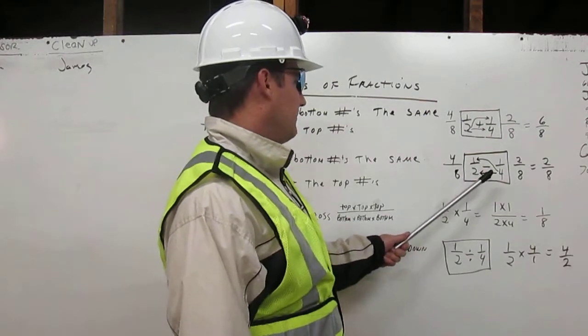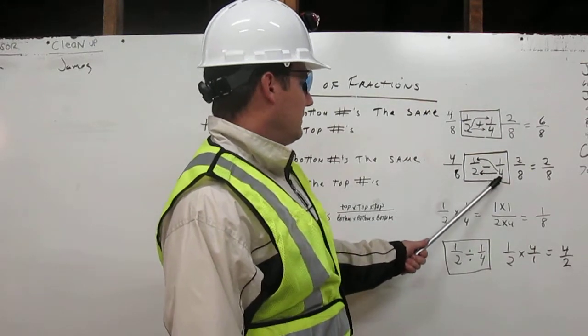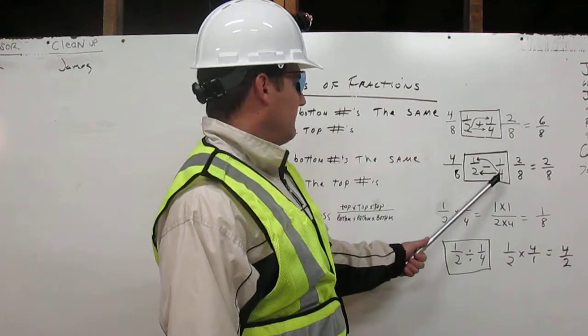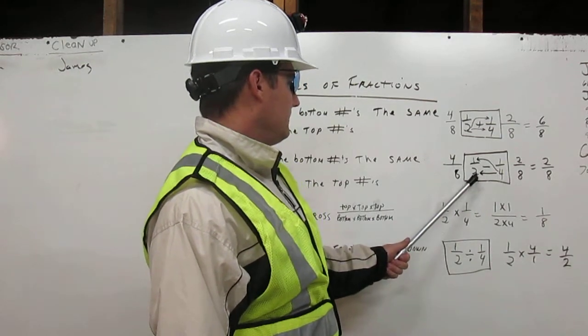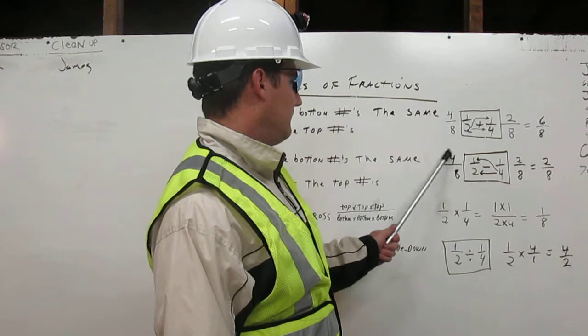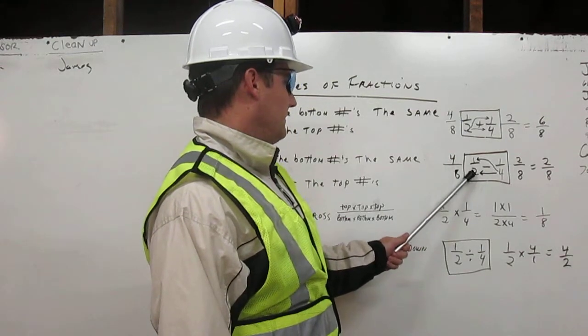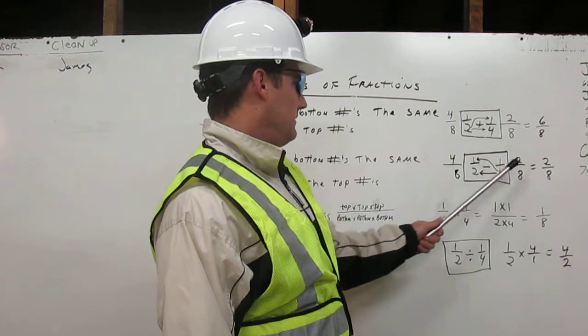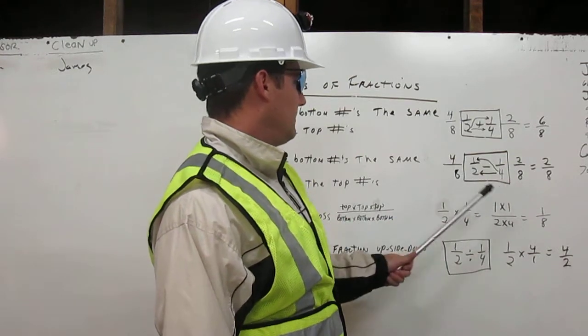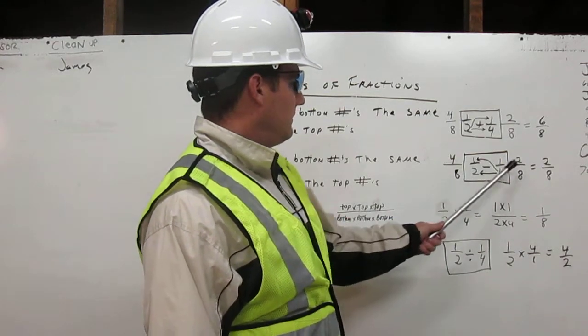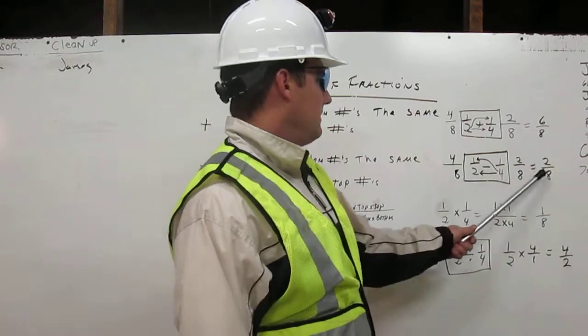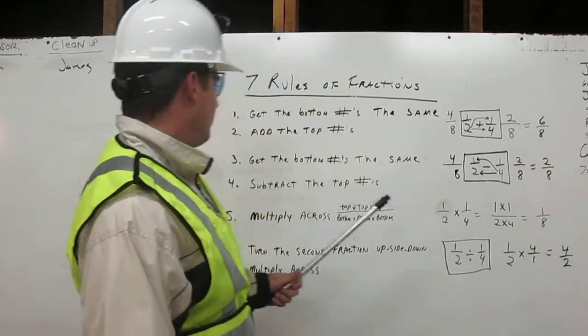So, we are going to cross multiply. Four times one is four, four times two is eight. Then, going the other way, two times one is two, two times four is eight. Then, we subtract. Four minus two is two. Carry the eight. The answer is two over eight. That's how we subtract fractions.